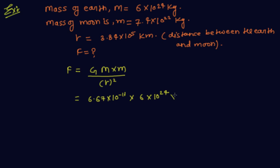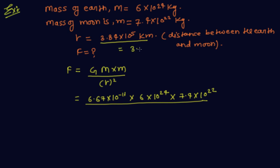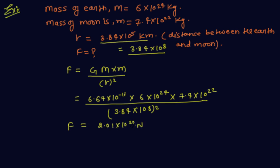Small m is 7.4 × 10²² kg, upon r square. Since R is given in kilometers and the standard unit of distance is meters, first change this to meters: 3.84 × 10⁸ m. Put the value of R as 3.84 × 10⁸, then square it. The final force value is 2.01 × 10²⁰ Newton. So the force exerted by the earth on the moon is 2.01 × 10²⁰ Newton.